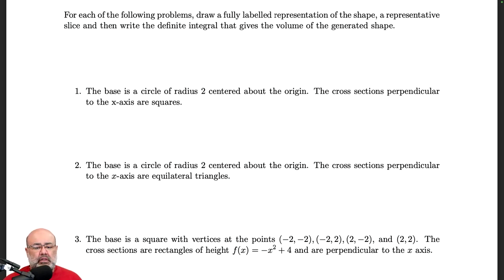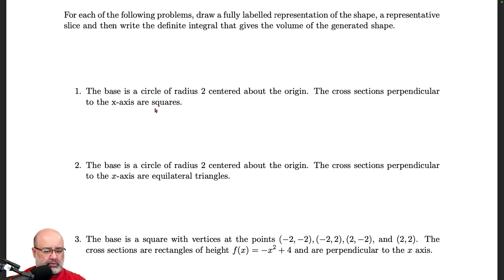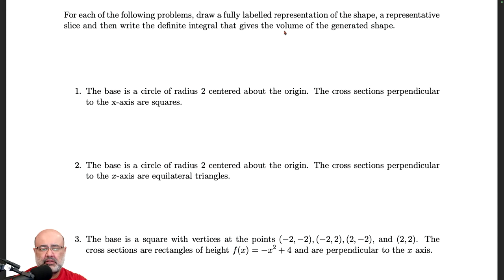In this video I'll work through at least a couple of these problems. The first one: we have a base of a circle of radius 2 centered about the origin, and the cross sections that are perpendicular to the x-axis are squares. We'll draw a fully labeled representation of the shape, the representative slice, and then write out a definite integral that gives the volume of that shape.